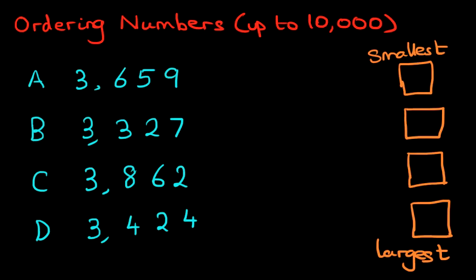Here it is. On the left hand side we've got four sets of numbers: A, B, C, D.